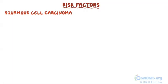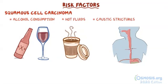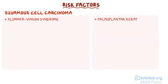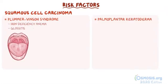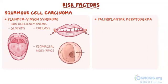Specific risk factors for squamous cell carcinoma include alcohol consumption, hot fluids, and caustic strictures, which is the narrowing of the esophagus following ingestion of a caustic substance like household bleach. Other predisposing conditions include Plummer-Vincent syndrome and palmoplantar keratoderma. Plummer-Vincent syndrome associates iron-deficiency anemia, glossitis or tongue inflammation, cheilosis or inflammation and cracking of the corners of the mouth, and esophageal webs or rings, which are concentric extensions of normal esophageal wall into the esophageal lumen that can cause difficulty swallowing. Palmoplantar keratoderma is a rare disease where thick patches of skin develop on the hands and feet.